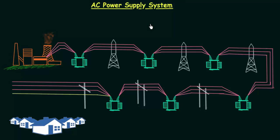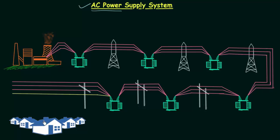In the previous lecture we completed the introduction to power systems. Now in this presentation we will try to understand the working of an AC power supply system. I will explain how AC power is transmitted or supplied from the generating end to the load end.